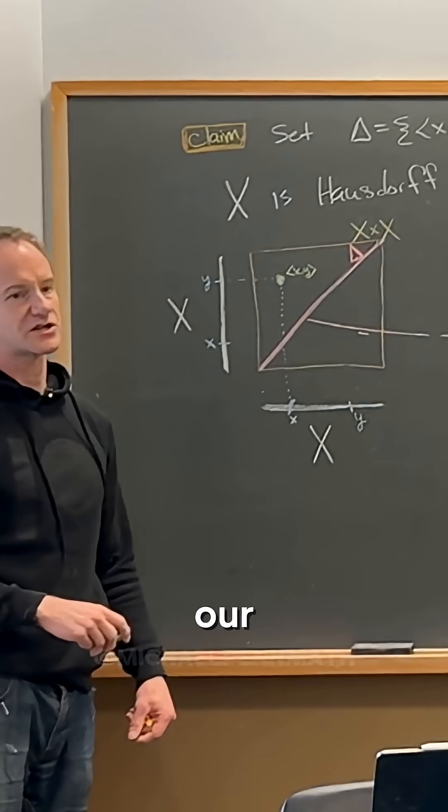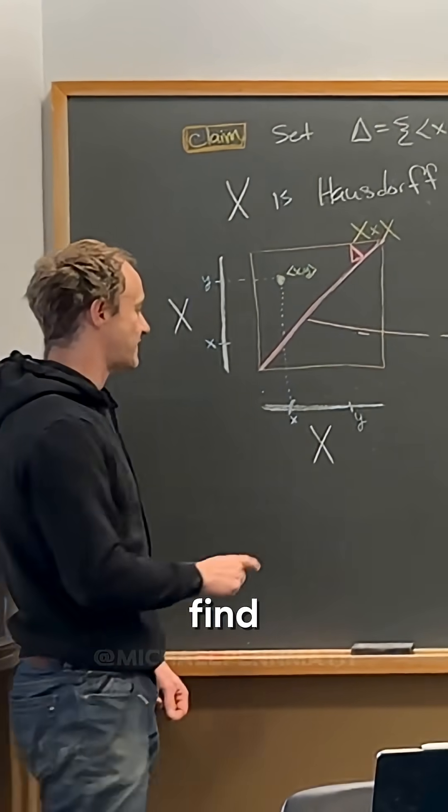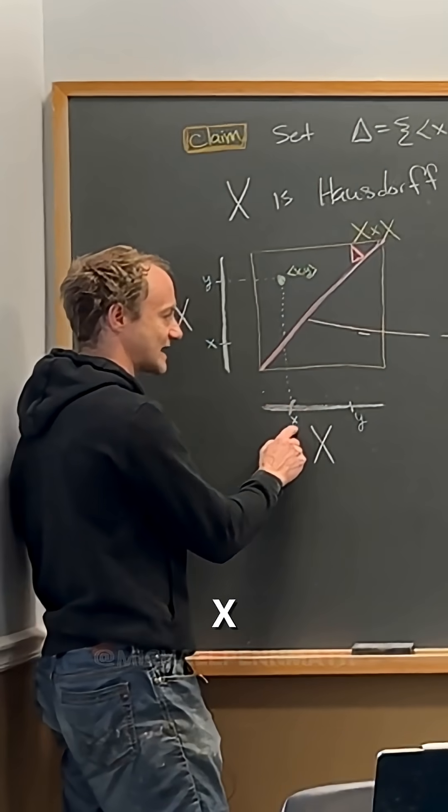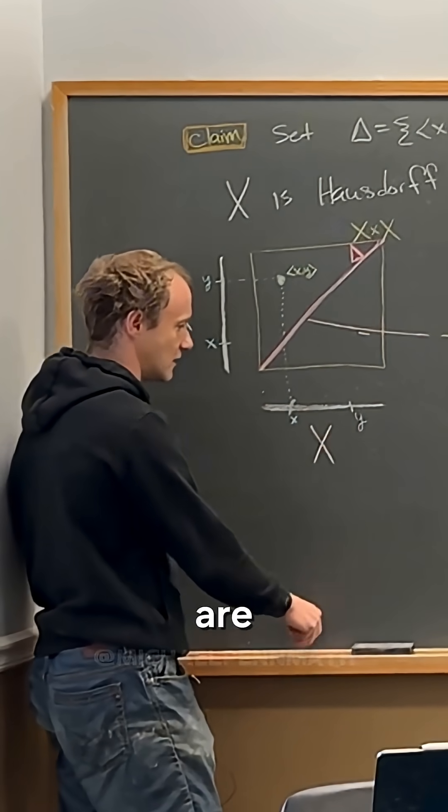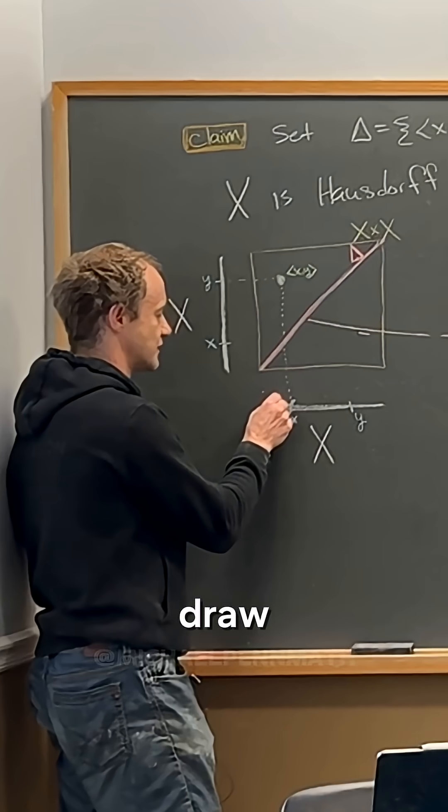And now since our space is Hausdorff, we can find a neighborhood of x and a neighborhood of y that are non-intersecting. So let's draw those pictures.